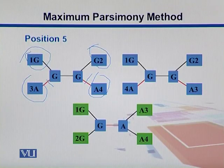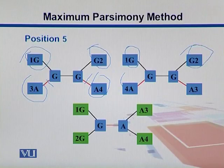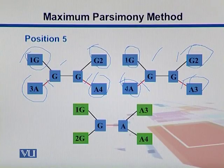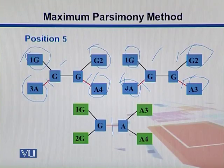Arranging sequences 1, 2, 3, and 4 in the second tree again gives two mutations or two changes, with internal nodes drawn as hypothetical ancestors. The third tree has only one mutation, making it the maximum parsimonious tree with the minimum number of changes. This bottom tree is the most likely tree for this scenario.